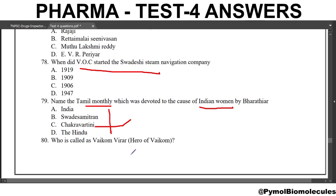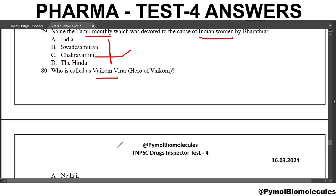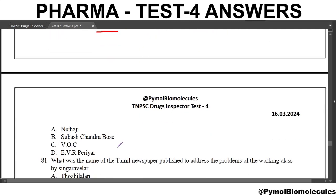Next question: who is called Vaikom Veeran, meaning the hero of Vaikom? The answer is E.V.R. Periyar. In Vaikom, Kerala, lower-caste people were denied access to the temple and the surrounding streets. Periyar helped the people in their struggle, so they hailed him as Vaikom Veeran.